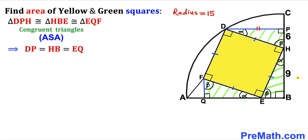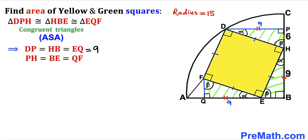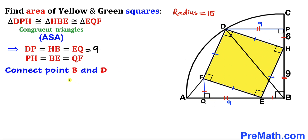Therefore we conclude that side length DP equals side length HB equals side length EQ. We know HB is 9, so DP equals 9 and EQ equals 9 as well. Furthermore, side lengths PH, BE, and QF are also congruent to each other, as you can see in the diagram.